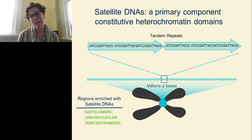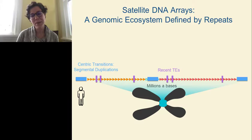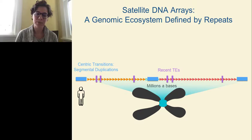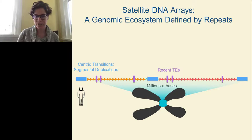These particular regions, because they're so dense in repeats, are absolutely why our assembly efforts fail and why they become the last regions of our genomes to be completed — to reach comprehensive telomere-to-telomere assemblies. Satellite DNAs occupy specialized genomic ecosystems: you have two very different tandem arrays, interrupted by transposable elements shown in purple, and satellite arrays are flanked by centric transitions enriched for segmental duplications.